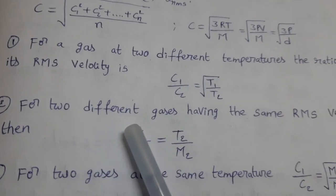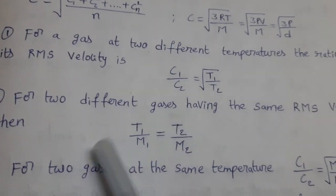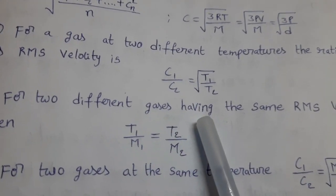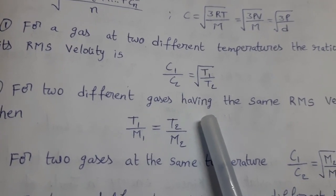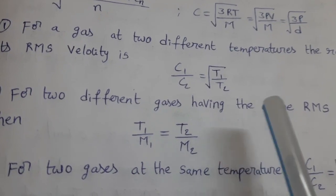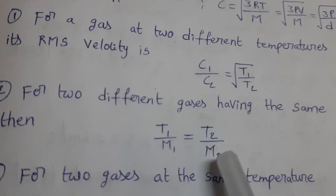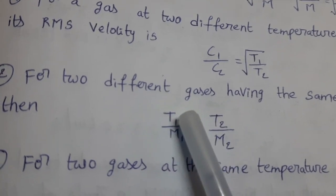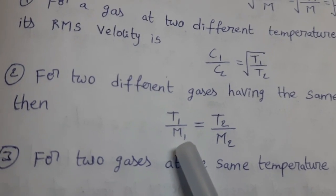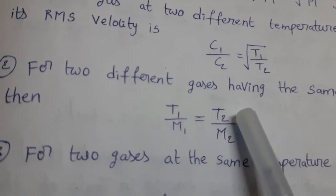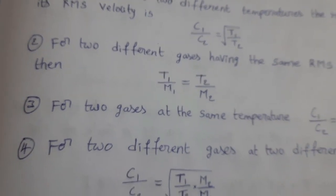For two different gases having the same RMS velocity, temperatures are different and molar masses are different. The relation is T₁/M₁ = T₂/M₂, where T₁ is the initial temperature of the first gas, M₁ is the molar mass of the first gas, T₂ is the temperature of the second gas, and M₂ is the molar mass of the second gas.